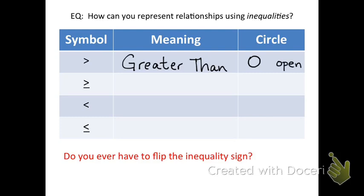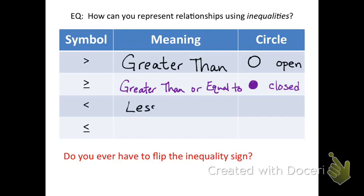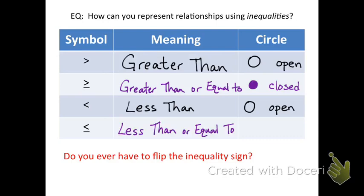The second inequality sign is greater than or equal to, and in every situation, greater than or equal to uses a closed circle or a colored-in circle. The third one is less than, and when graphing a less than inequality, it also uses an open circle. The last one is less than or equal to, and less than or equal to will also use a closed circle.